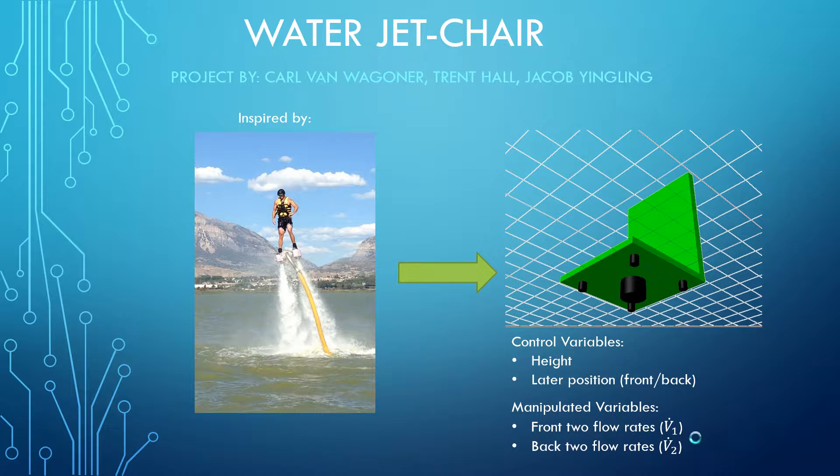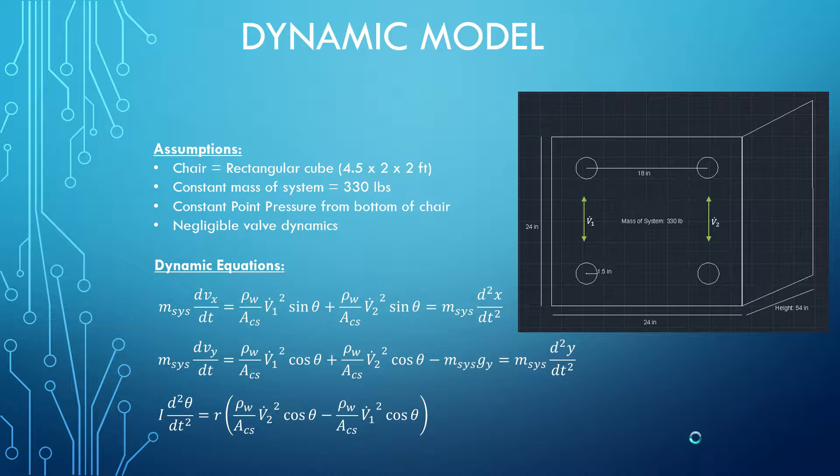To make our achievement of this objective simple, we made some simplifying assumptions. We decided that the chair and rider system would be adequately described by a rectangular cube, and the mass of that system would be constant despite the water going through it.